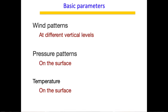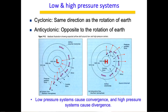The basic parameters we can learn from weather charts are the wind patterns at different vertical levels and the pressure patterns on the surface. When you put these two together — wind and pressure patterns — you can actually get information about the temperature on the surface.